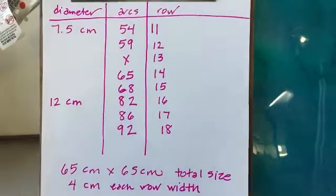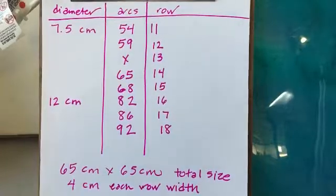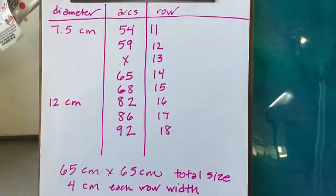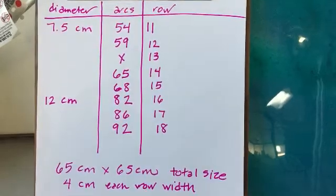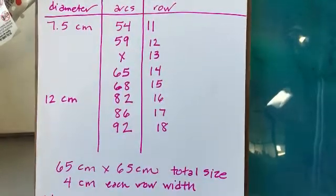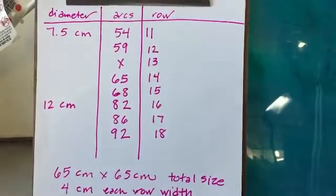And I measured it again and by that time the diameter was 12 centimeters. Then we get to row 17, there are 86 arcs, row 18 there are 92 arcs.